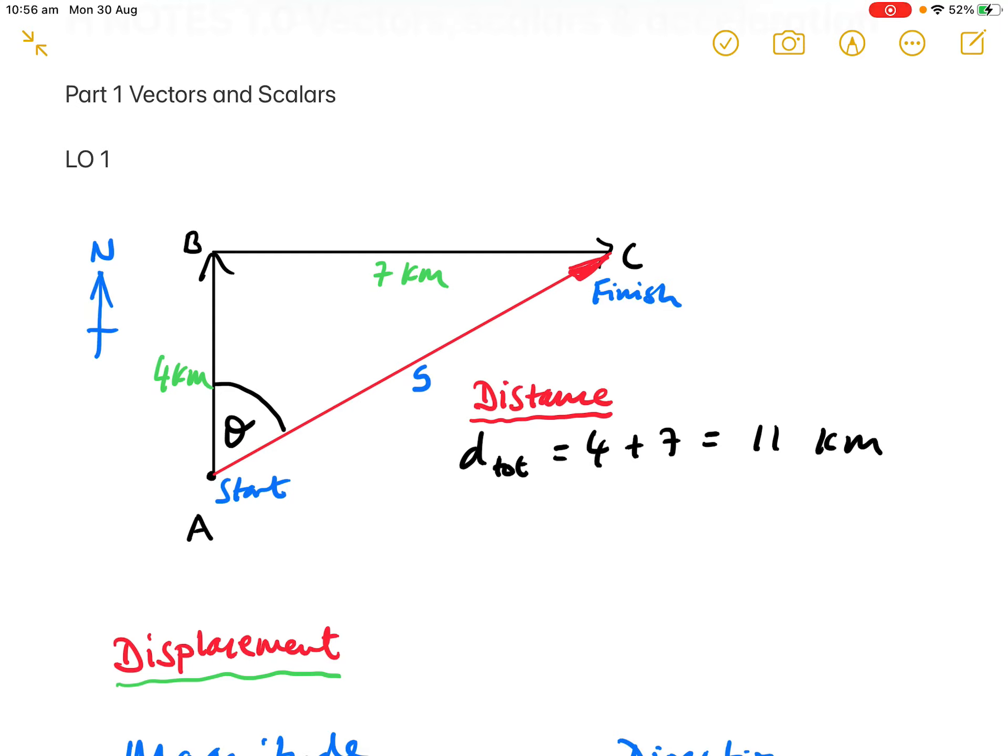We'll start by indicating direction north, as you can see in the diagram. We'll imagine a simple journey of someone walking from a starting position A, walking due north for 4 kilometers, represented by the arrow.